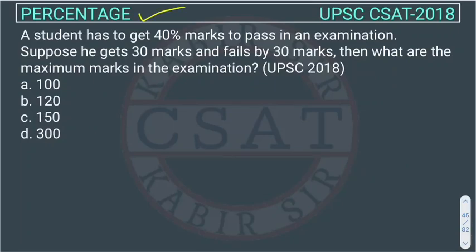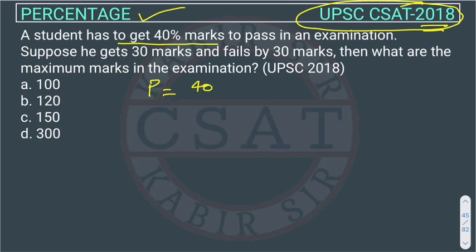This is the percentage question asked in UPSC CSET 2018. The question is: a student has to get 40% marks to pass in an examination. So out of total marks, how much marks does he have to get? He has to get 40% marks to pass.